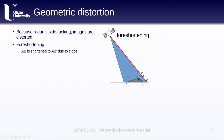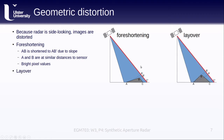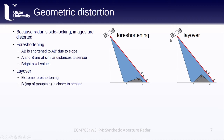We also tend to see bright pixel values associated with these slopes because they're actually facing the sensor and reflect a lot of energy directly back. The next kind of distortion is layover. Layover is an extreme version of foreshortening where A prime is actually recorded at a distance further away from the sensor than B prime, so the top of the mountain is effectively laying on top of the bottom of the mountain. This happens because in the satellite's look direction, the top of the mountain is actually closer to the sensor than the bottom.